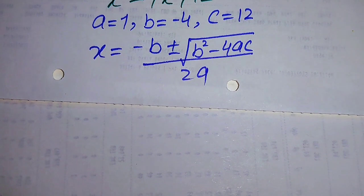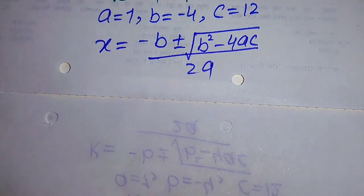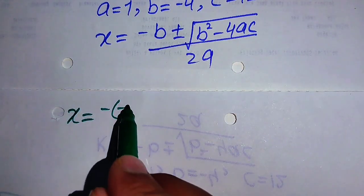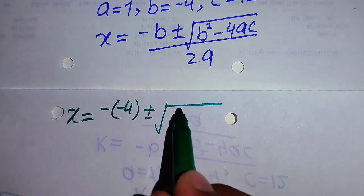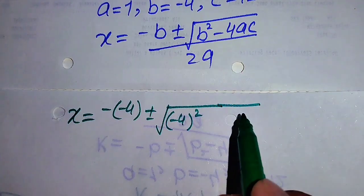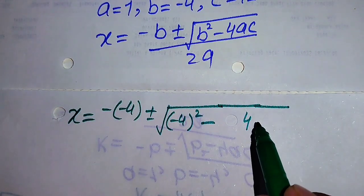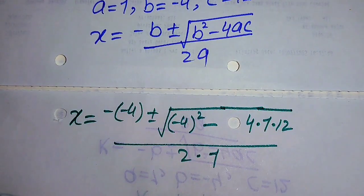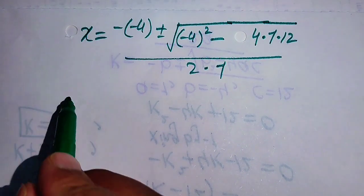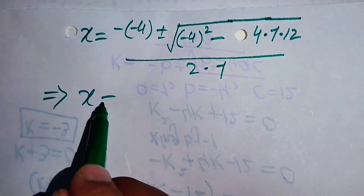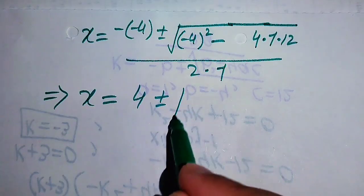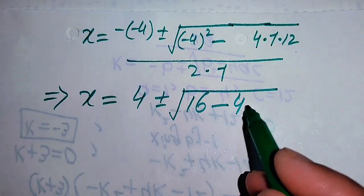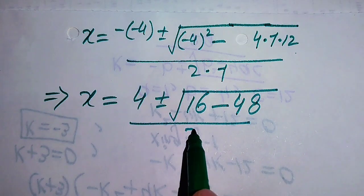Substituting all values: x equals minus(minus 4) plus or minus the square root of (minus 4) squared minus 4 times 1 times 12, divided by 2 times 1. This simplifies to x equals 4 plus or minus the square root of 16 minus 48, divided by 2.